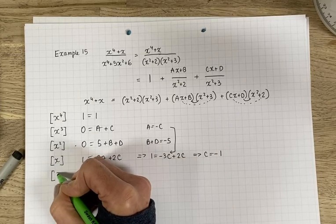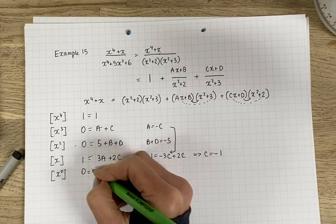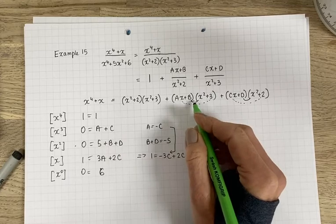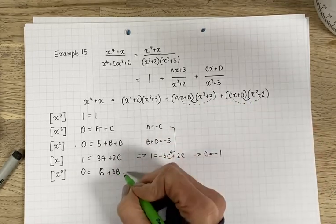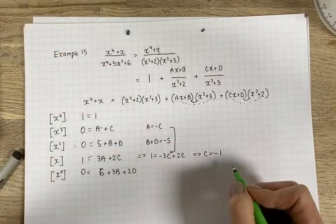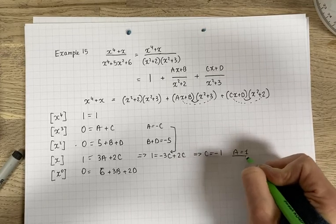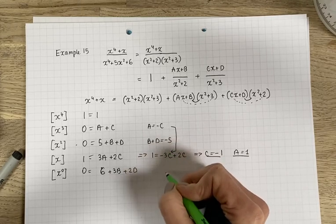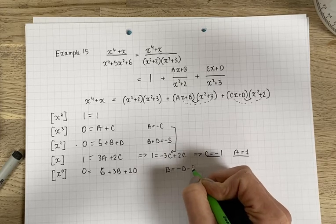Okay let's carry on and find the last one which we can find. Zero constants. You've got 6 from the first expansion. You've got 3b from the second expansion and you've got 2d from the last expansion. Okay. By the way I found what I can get what a is. That's going to be 1 from this one. Okay. But I also know that b plus d is equal to minus 5. b is therefore minus d minus 5.